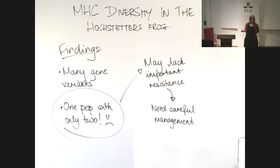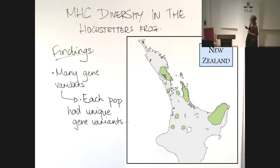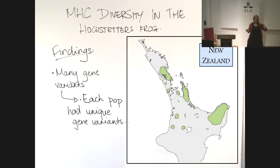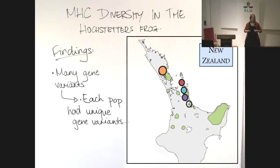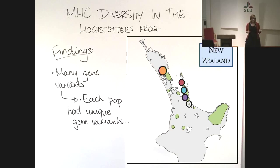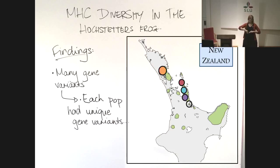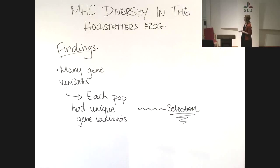But I like the MHC and we wanted to have a look at the other ones. So in our other populations where we had lots of diversity, lots of gene variants, we actually found that each population was essentially unique in what genes they had. This is actually kind of weird for MHC.